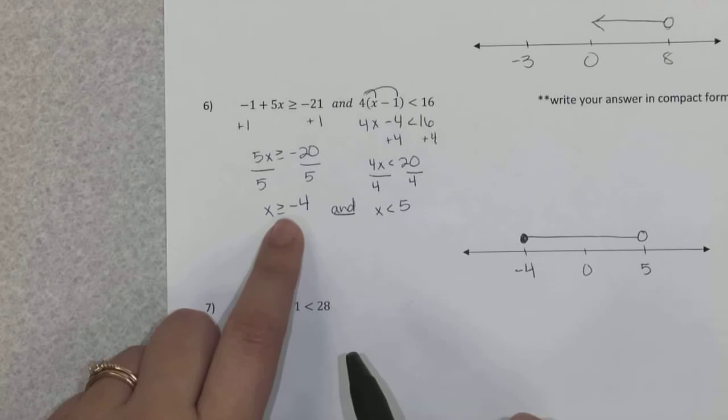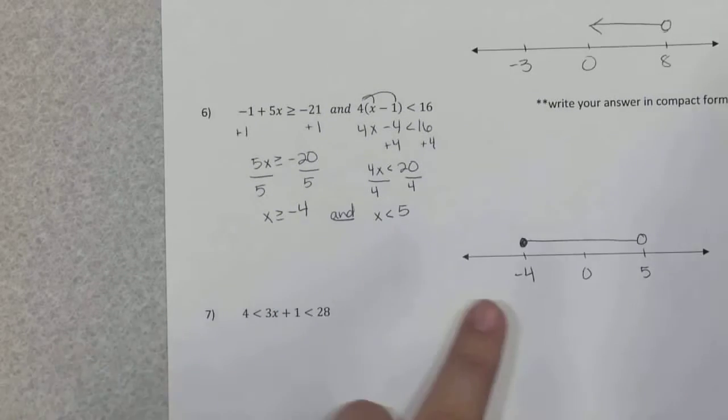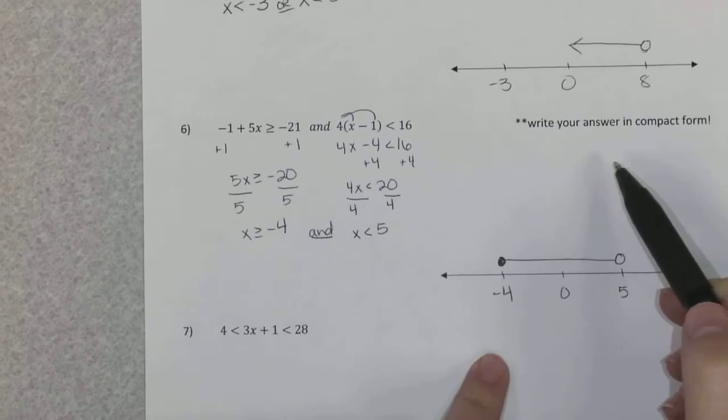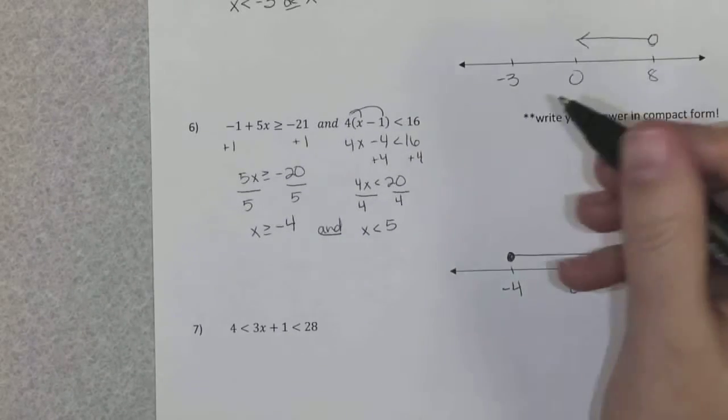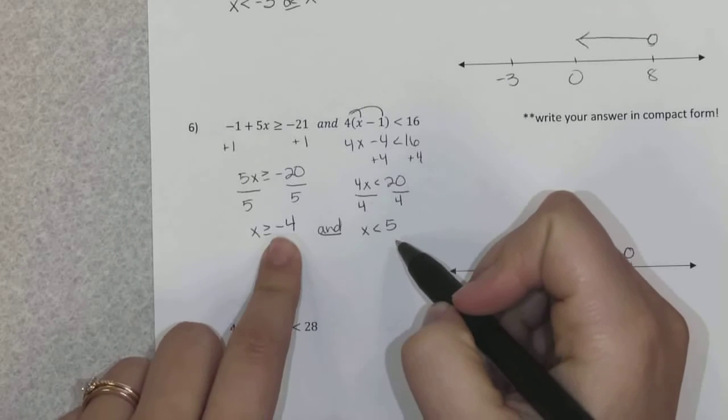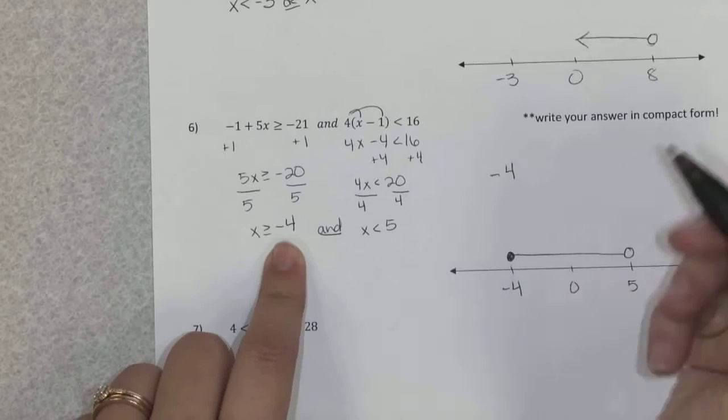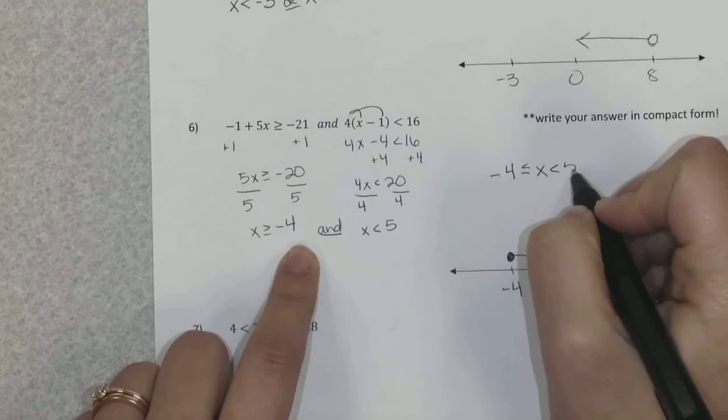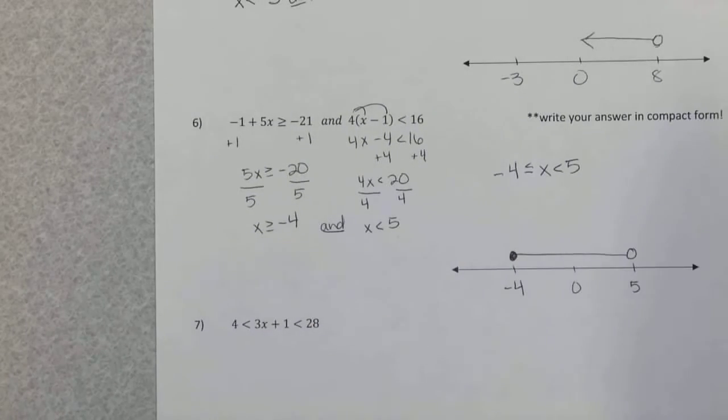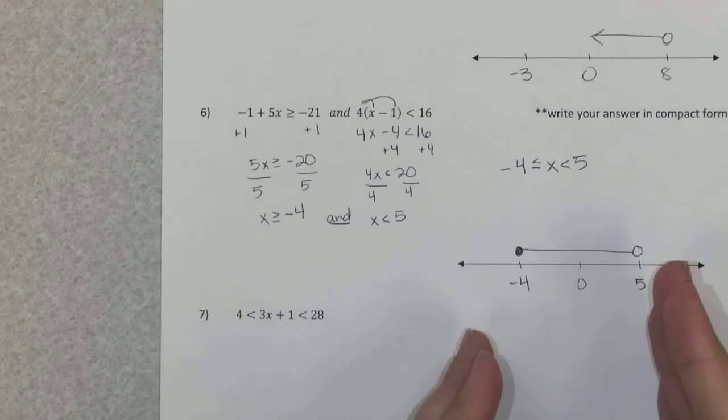Number 6 is an and inequality. My answers are x is greater than or equal to negative 4 and less than 5. So there's my graph. Now it says here write your answer in compact form. Compact form is when you're just writing as one inequality, and when you do that you take your smallest number from your two answers and that goes on the left. So I have negative 4 and the sign less than or equal to x which is less than 5, and that's in compact form.